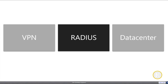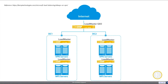Conceptually, we have requests coming in from the internet to the LoadMaster Geo — a Global Server Load Balancing solution — which distributes requests amongst data centers, monitors each location, and routes requests accordingly. We can add intelligence: if you are closer to DC1, send you there as your preferred data center; if closer to DC2, send you there. Then within each data center, we load balance VPN servers and NPS servers to ensure redundancy and scalability.